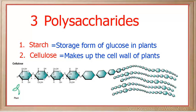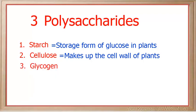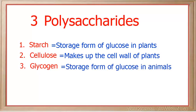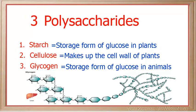We can identify a diagram of cellulose as a long chain of monosaccharides bonded together with no side chains or branches and with alternating bonds. The third polysaccharide is called glycogen. Glycogen is the storage form of glucose in animals, and we can recognize a diagram of glycogen as a long chain of monosaccharides bonded together with many side branches off of it.